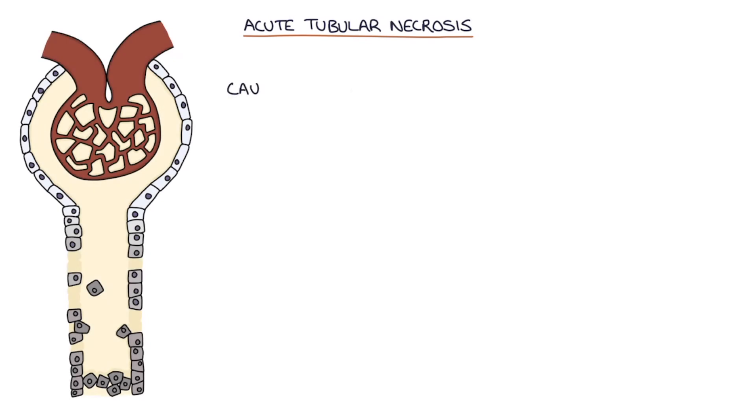So what are the causes of acute tubular necrosis? Well, the ischemia that leads to the necrosis of the epithelial cells can occur secondary to hypoperfusion. So a low perfusion with blood in shock or in sepsis or in severe dehydration.